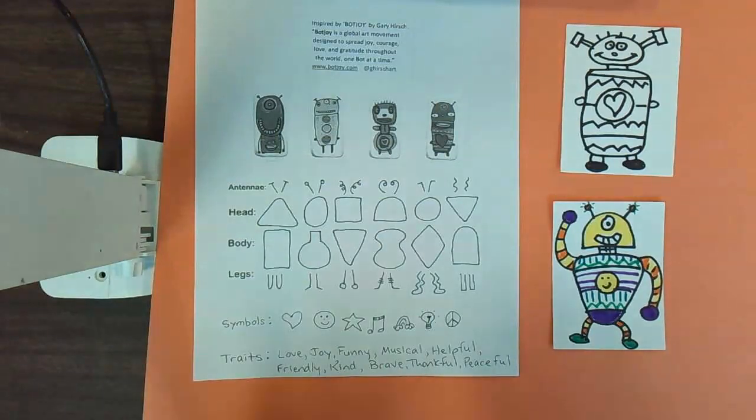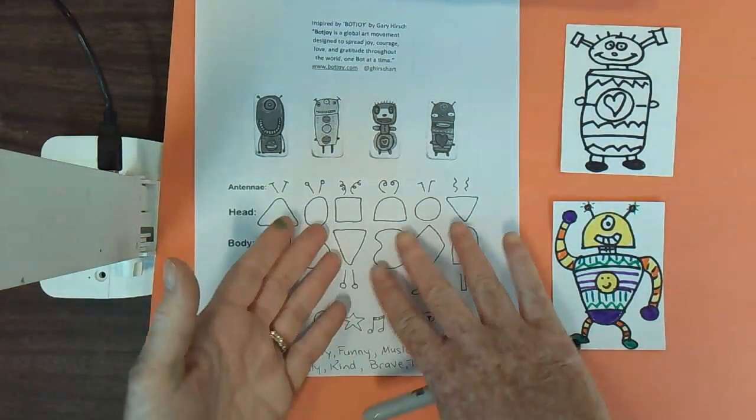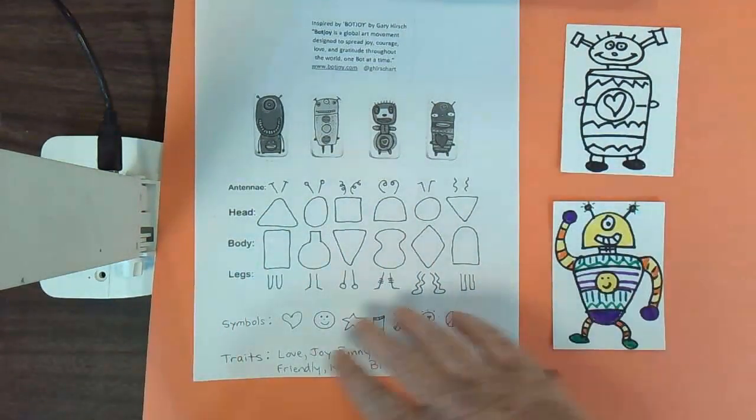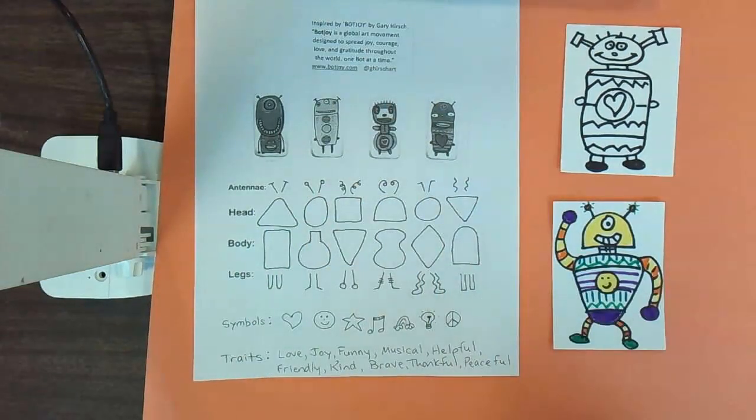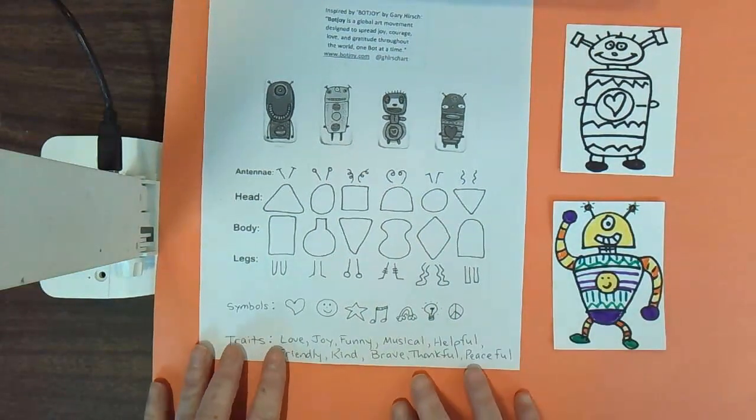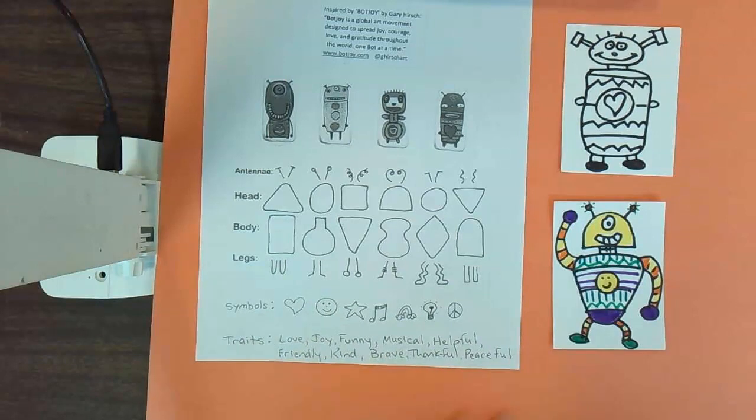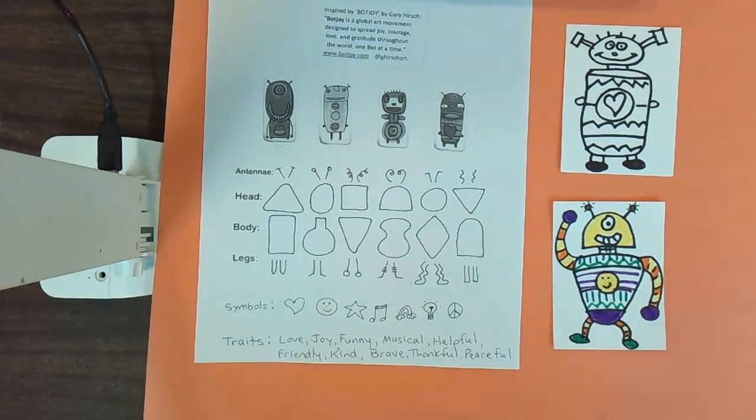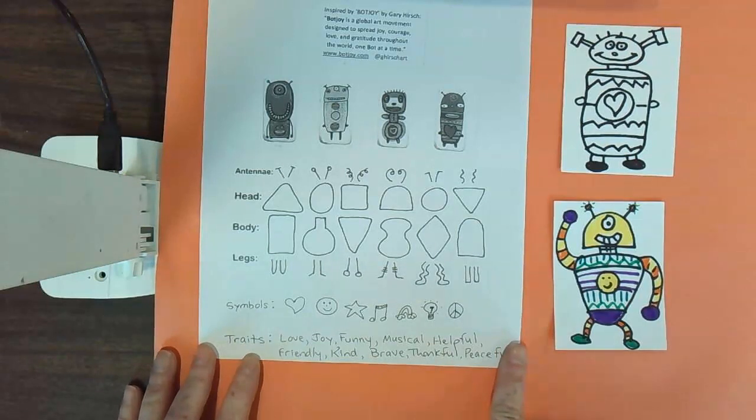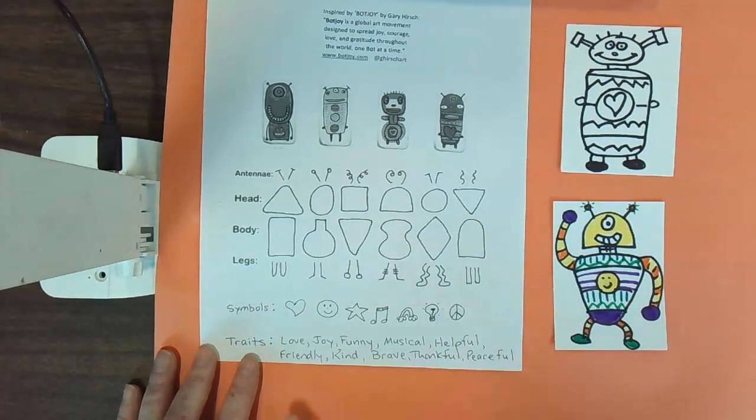We're going to begin by thinking about some basic shapes that we want to use to make the head, the body, the legs. You want to be thinking about what type of a bot you want to make. We're going to be keeping these all positive bots, so we want to be thinking of positive traits. We thought of a few here at the bottom and we can brainstorm some more as a class.